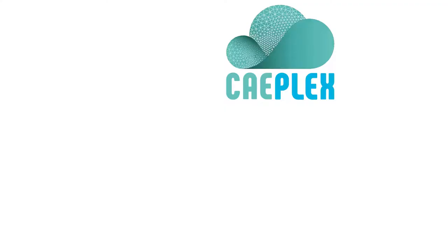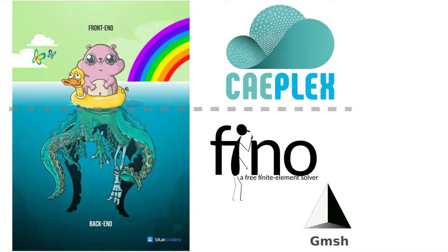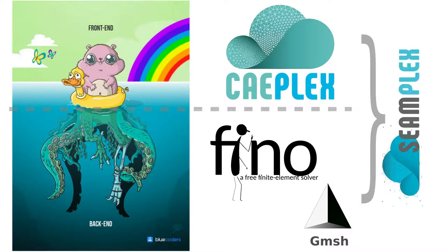Technically, CAPlex is a web frontend for two computational backends: a mesher and a finite element solver. The mesher is Gmsh, which is free and open source, written by people from Liège University in Belgium. The solver is Fenico, written by our company and also free and open source, released under LGPL v3+. Our company controls almost the whole spectrum, from the user interface down to computing the partial derivatives of the shape functions within 10-node tetrahedra.